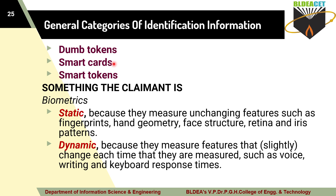Smart tokens are similar to smart cards, but along with user information, smart tokens also use some cryptographic techniques. They can generate nonces with the help of a random generator, or they can use a key scheduling algorithm to get the keys. That is what we call smart tokens. These are some categories used to prove the identification information.